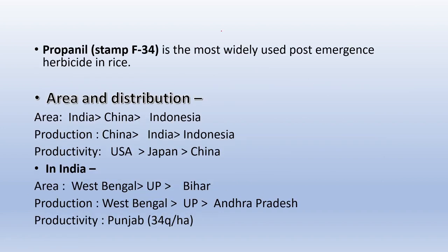Regarding area and distribution: India comes first in area, followed by China and then Indonesia. In production, China leads, followed by India. In productivity, the USA leads, followed by Japan and then China. In India, area-wise the highest rice production is in West Bengal, then UP, then Bihar. Production-wise, West Bengal leads, followed by UP and then Andhra Pradesh. Productivity-wise, Punjab leads.